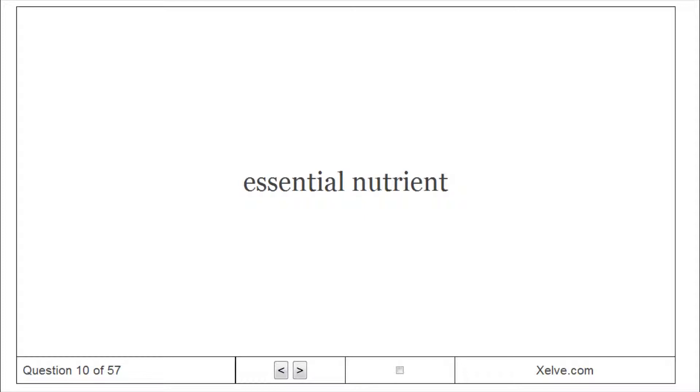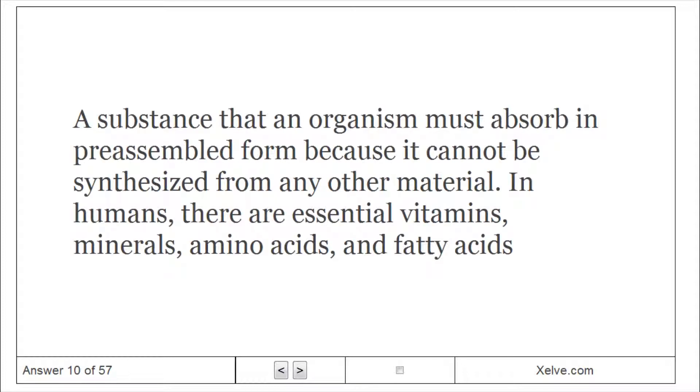Essential nutrient – a substance that an organism must absorb in preassembled form because it cannot be synthesized from any other material. In humans, there are essential vitamins, minerals, amino acids, and fatty acids.